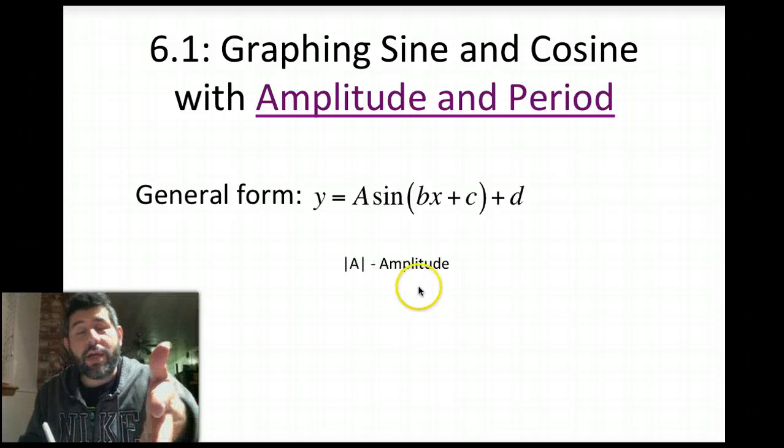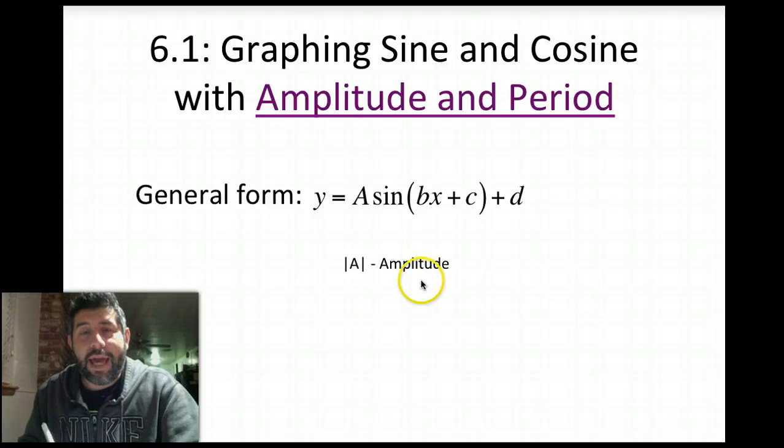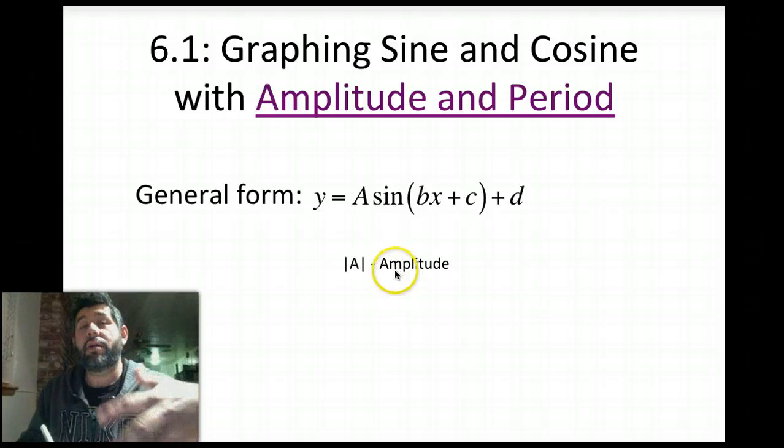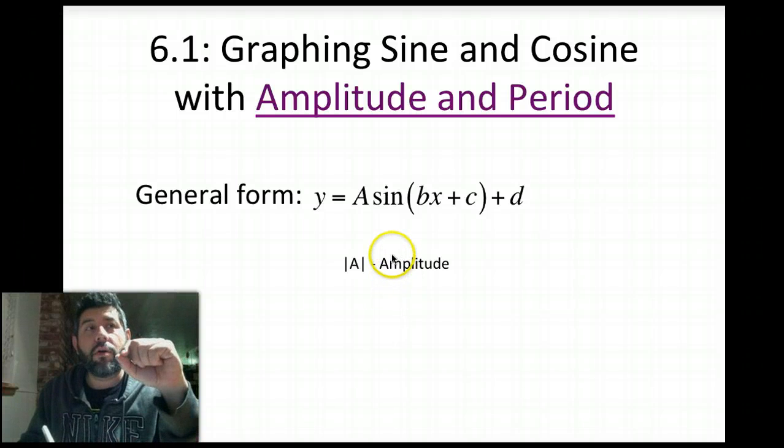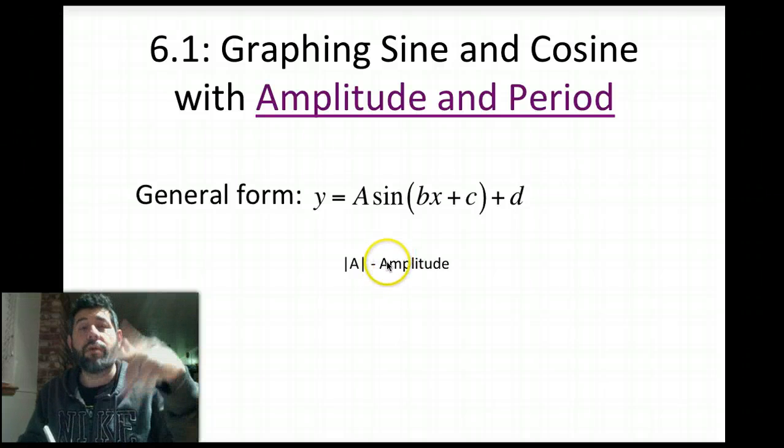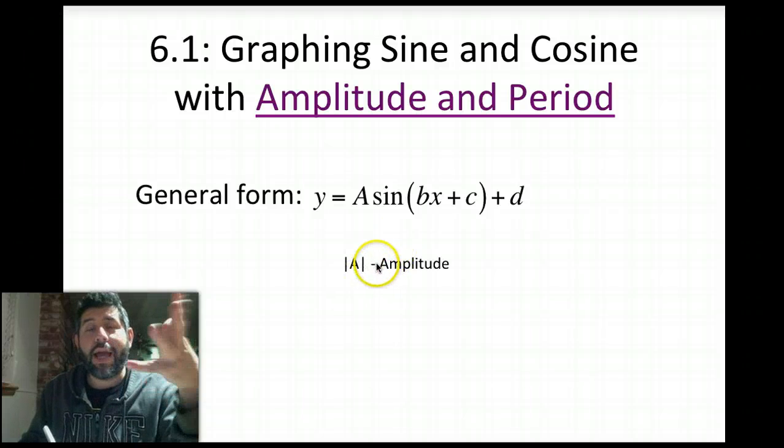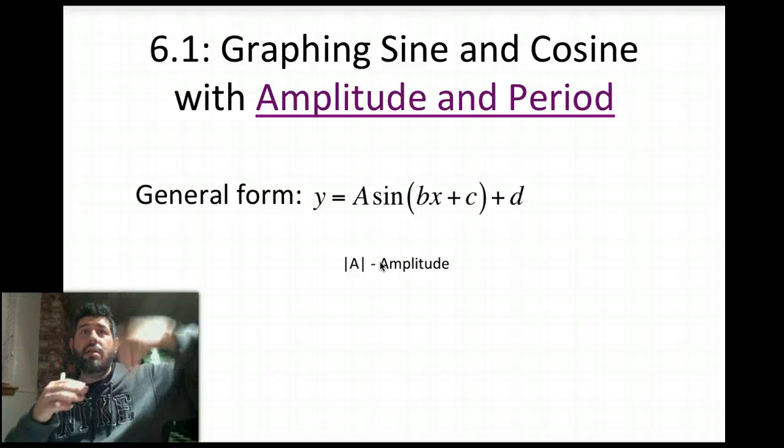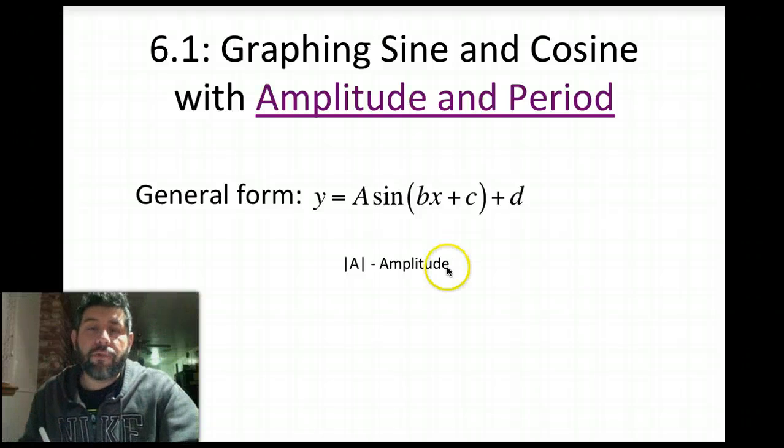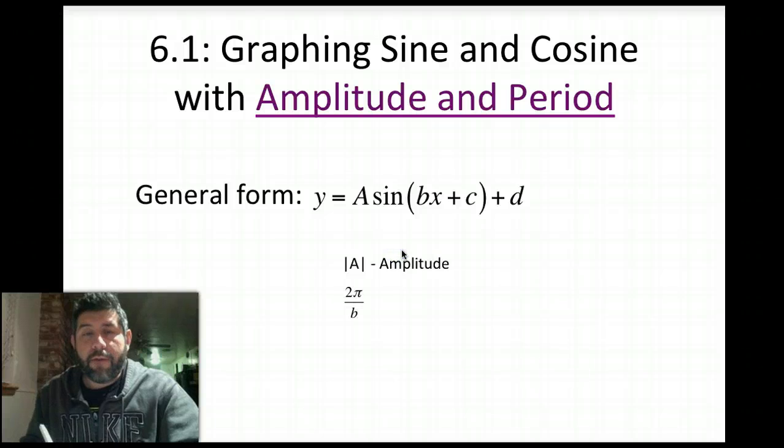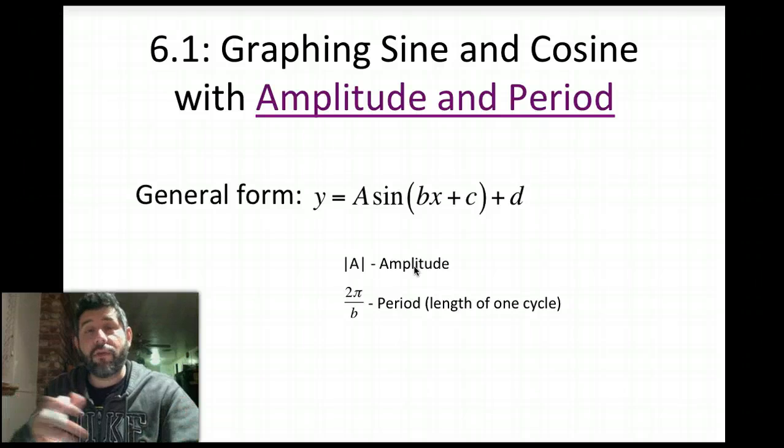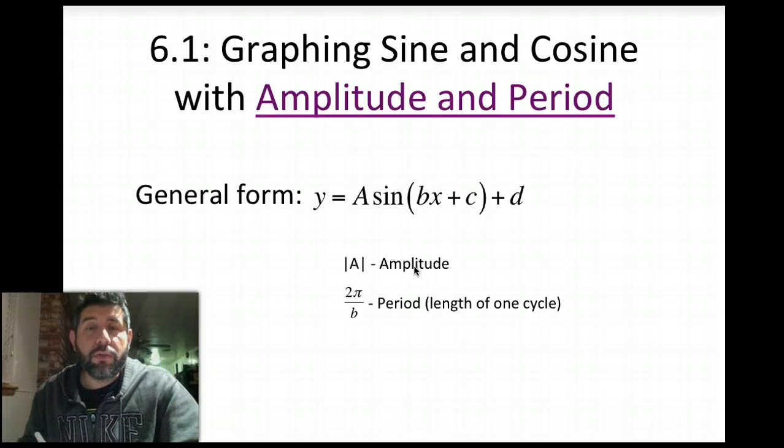So a is called the, actually the absolute value of a is called the amplitude. So absolute value of a, because what if the a was negative? Well, we remember from our functions that we have a negative in front of our function, we would just flip it, and it would be a reflection about the x-axis. So in this case, what our amplitude is, it's really the height that our graph goes to. We want to make sure we take the absolute value of that. The formula for finding our period, and like I told you before, the period is the length of one cycle, the time it takes to repeat, is going to be 2 pi over b.